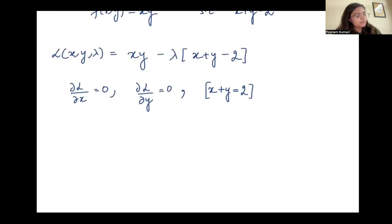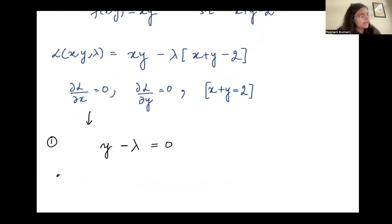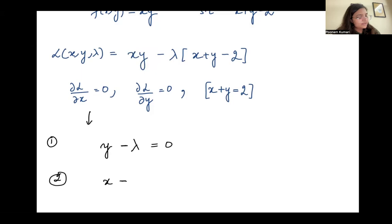For the first equation, we take the partial derivative with respect to x. Since x is the variable and y is constant, we get y minus lambda equals 0. For the second equation, y is the variable and x is constant, so we get x minus lambda equals 0.